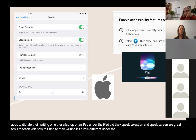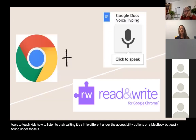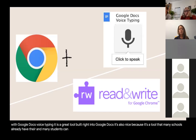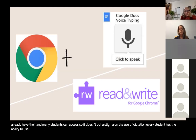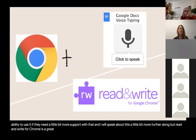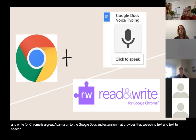On the iPad, speak selection and speak screen are great tools to teach kids how to listen to their writing. It's a little different under the accessibility options on a MacBook but easily found in those settings. If students are using a Chrome browser or a Chromebook, always start with Google Docs voice typing — it's a great tool built right into Google Docs. It's nice because many schools already have it and every student can access it, so it doesn't put a stigma on the use of dictation.